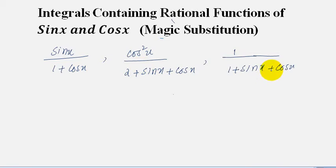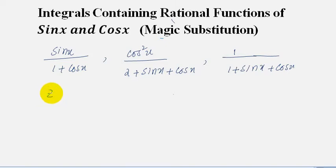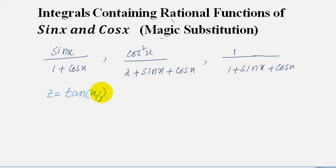A few examples of rational functions of sine x and cos x are shown on screen. In order to integrate such a function, we use the substitution z equal to tan(x/2), where x is our independent variable.